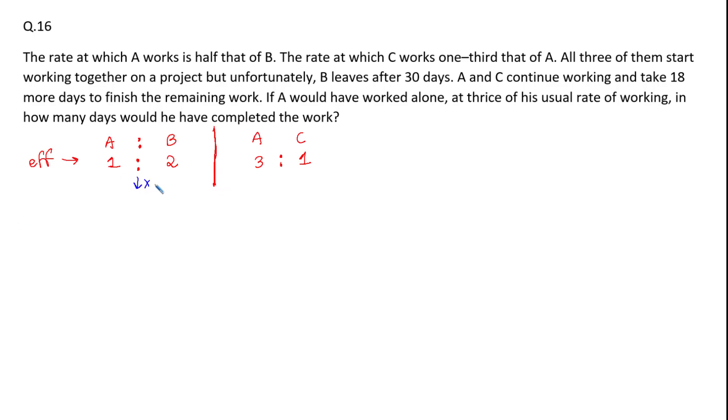If we multiply first ratio by three, this ratio becomes three is to six. So now from this we can see that the efficiency of A, B, and C is in a ratio 3 is to 6 is to 1.